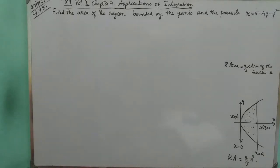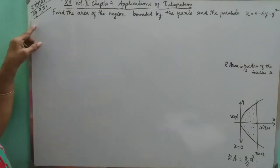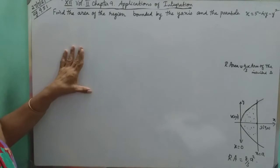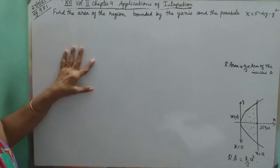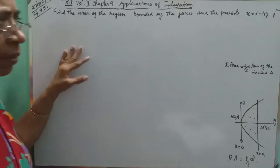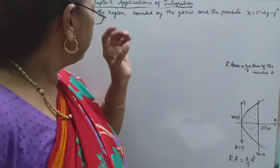Hello students. Now my example is 9.51 — find the area of the region bounded by the y-axis and the parabola x is equal to 5 minus 4y minus y squared.